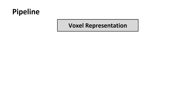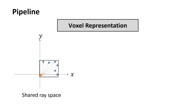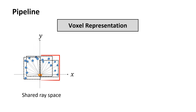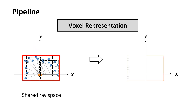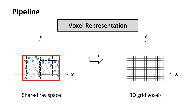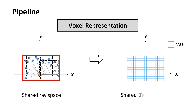To speed up voxel determination using ray shooting on the GPU, we first define a shared ray space where ray shooting performs and fill the space with 3D grid voxels. Then we use AABBs to represent voxels and build the shared bounding volume hierarchy of AABBs.